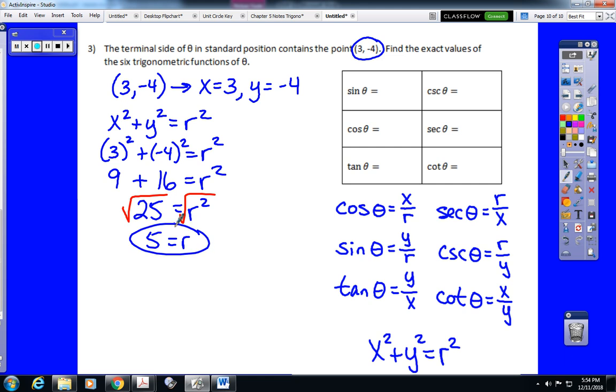That means the sine, which is y over r, would be negative 4 fifths. The cosine, which is x over r, would be 3 fifths. The tangent, which is y over x, would be negative 4 thirds. The cosecant, which is r over y, would be 5 over negative 4. The cosecant, which is r over x, would be 5 over 3. And the cotangent, which is x over y, would be 3 over negative 4. That completes the first page of the packet.